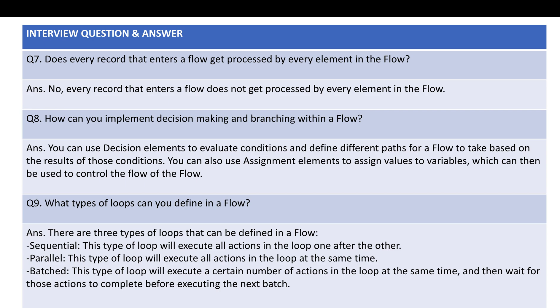What types of loops can you define in a Flow? There are three types: sequential, parallel, and batches. Sequential executes all actions in the loop one after the other. Parallel executes all actions at the same time. Batches execute a certain number of actions at the same time, then wait for those to complete before executing the next batch. So: sequential goes one by one, parallel runs all at once, and batches process in groups.